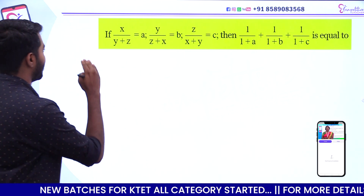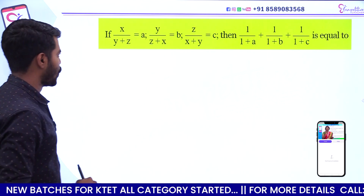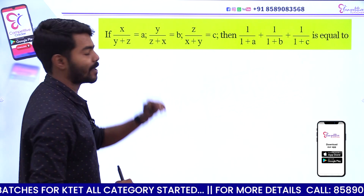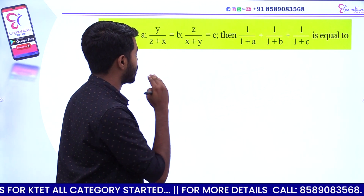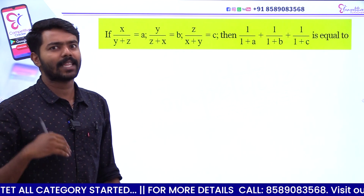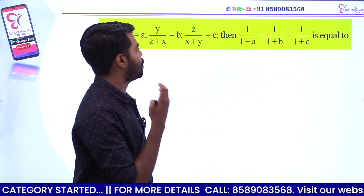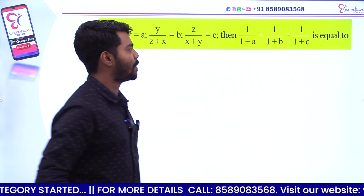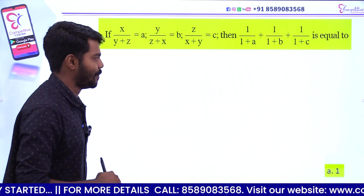If x by y plus z equal to a, y by z plus x equal to b, z by x plus y equal to c, then find the value of 1 by 1 plus a plus 1 by 1 plus b plus 1 by 1 plus c.